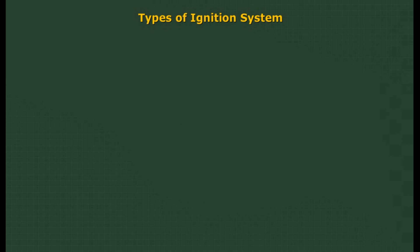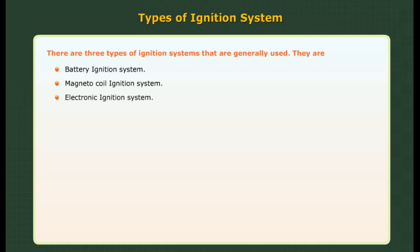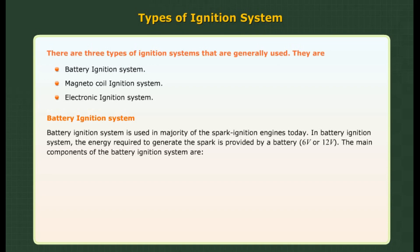Types of ignition system: There are three types of ignition systems generally used — battery ignition system, magneto coil ignition system, and electronic ignition system.